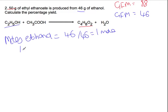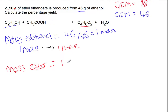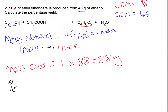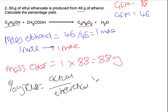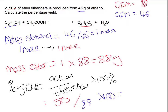We have a 1 to 1 ratio here, so 1 mole of ethanol should have produced 1 mole of our ester. That allows us to calculate the mass of ester we should have produced: 1 mole multiplied by the gram formula mass of 88, so we should have produced 88 grams. Instead we produced 50 grams. For our percentage yield we do actual divided by theoretical times 100: 50 divided by 88, multiplied by 100, gives a percentage yield of 56.8%.